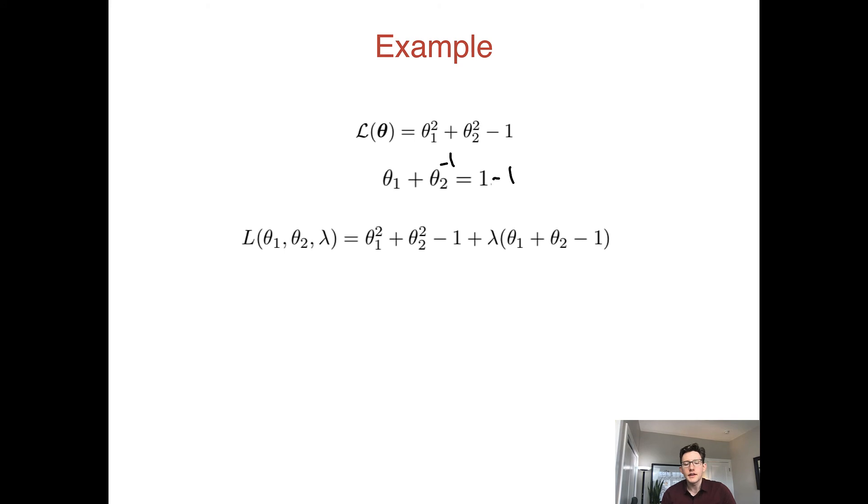Now let's calculate our partial derivatives with respect to each one of our parameters. Here's with respect to θ₁. If we do the derivative, you can see it's 2θ₁ + λ. Same thing goes for θ₂, 2θ₂ + λ.